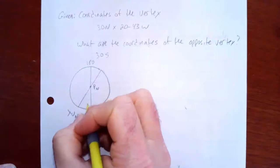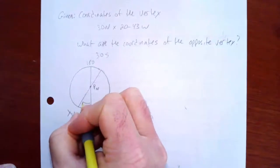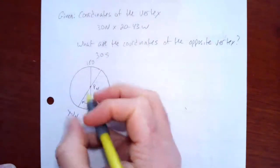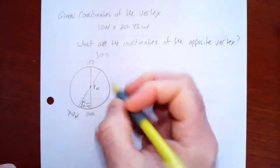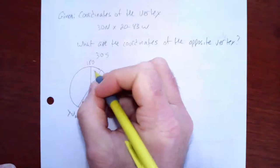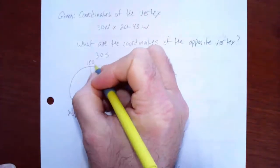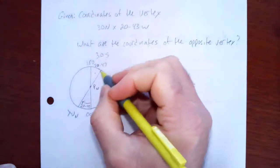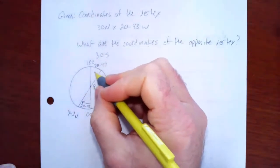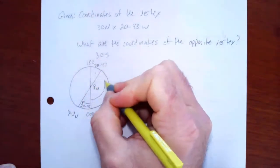Now, this angle here, I know this angle right here is 20°43'. 20°43', which means that this angle here also has to be 20°43'. That's also got to be 20°43'. So I know that this angle is 20°43'. I'm looking for this angle.